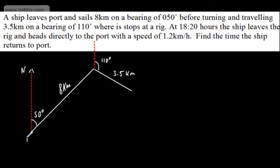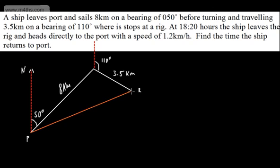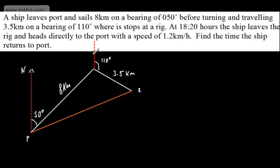So what we've got here now is P for the port and R for the rig. What we're going to do is stop at the rig and we want to go back now to the port. If I connect this up, that journey is going to be from R to P. These two north lines are parallel, so we can use co-interior angles — these two angles right here are going to add up to 180 degrees. So that will be 130 degrees. I've got 130 and 110, which means this angle right here needs to be 120 degrees.